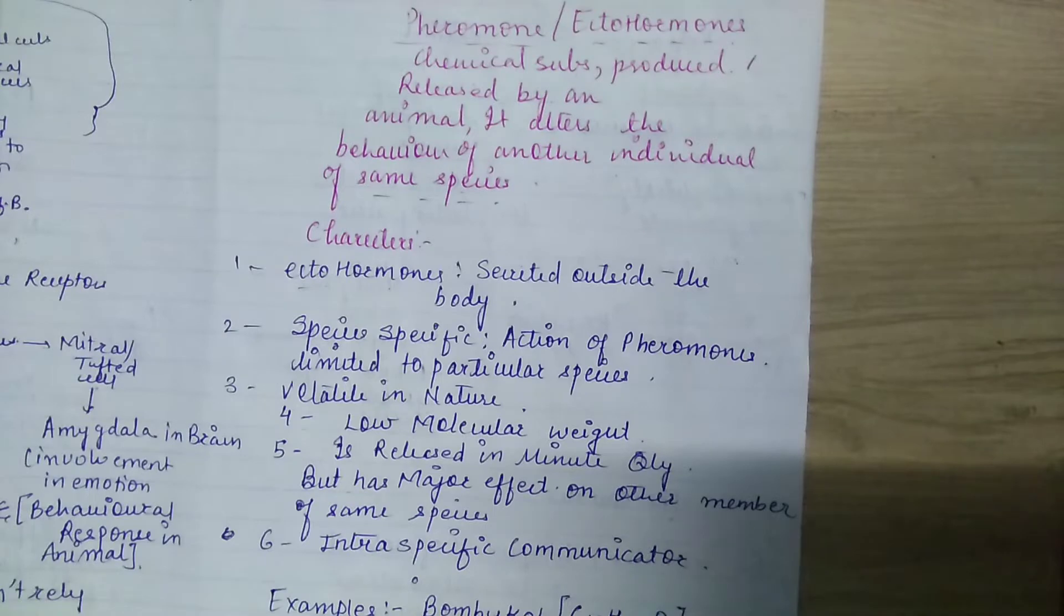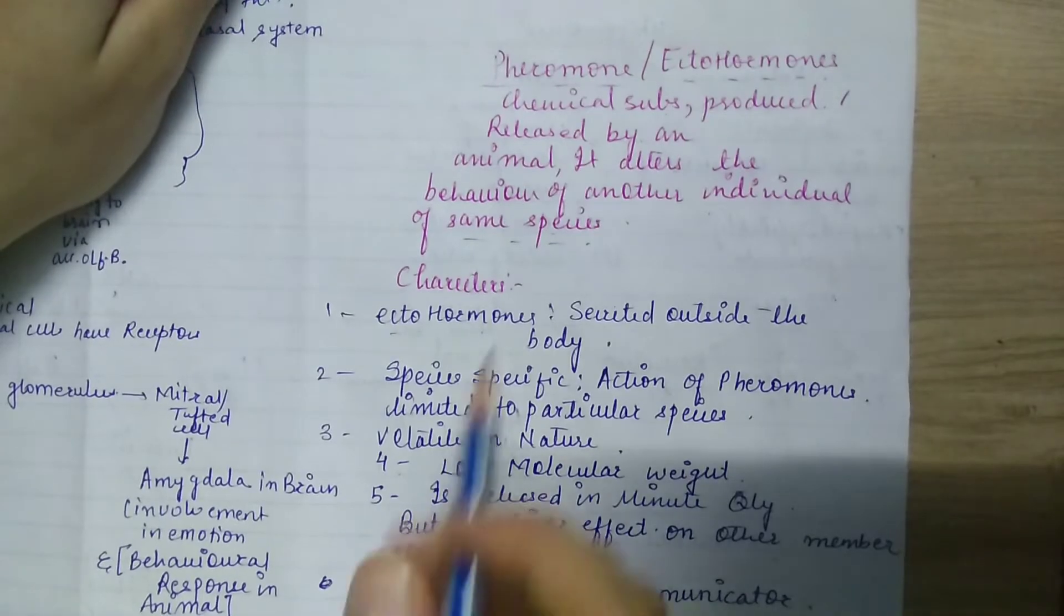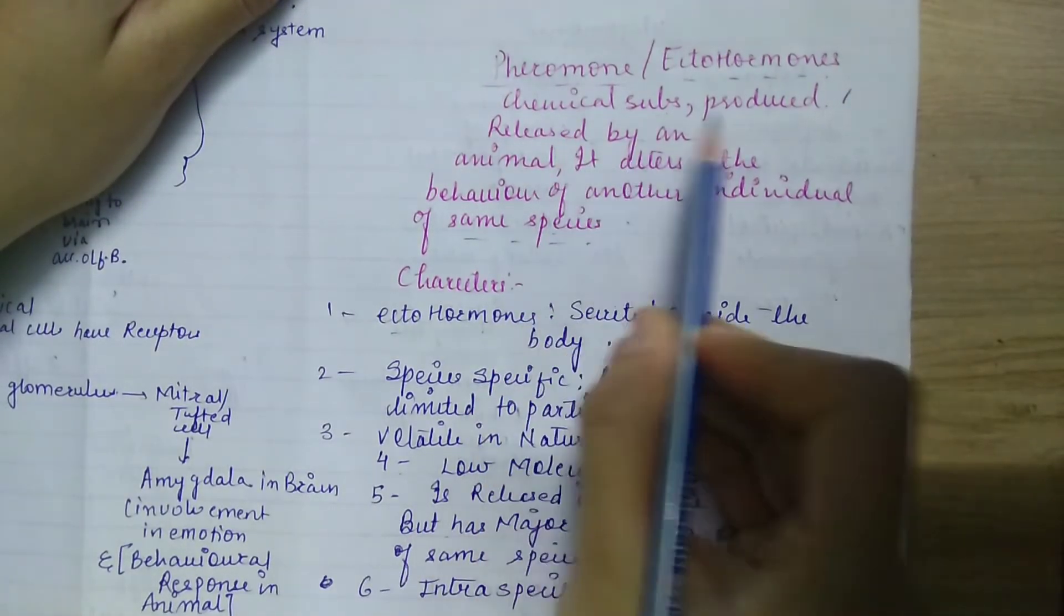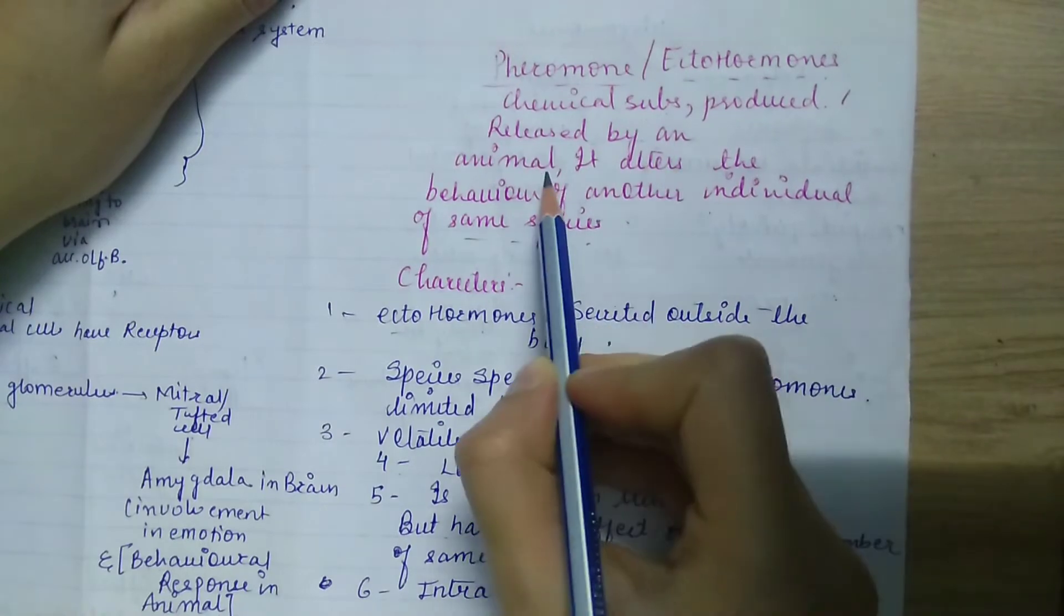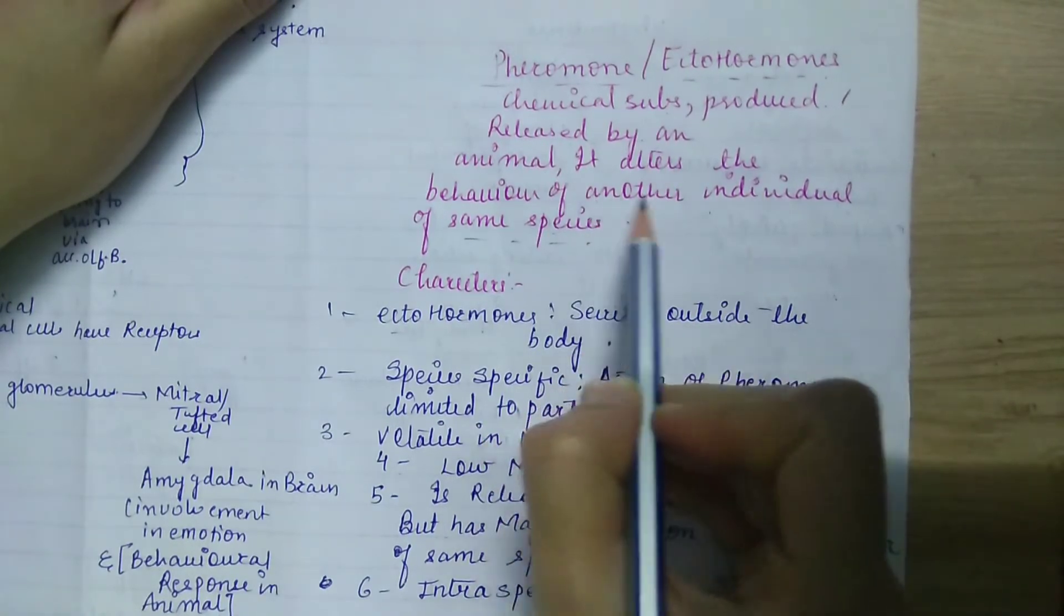Actually, what they are doing is marking territories. There are particular molecules released in their urine, and these molecules can be scented or sensed by other animals of the same species. These molecules are known as pheromones. The definition says: chemical substance produced and released by an animal that alters the behavior of another individual.